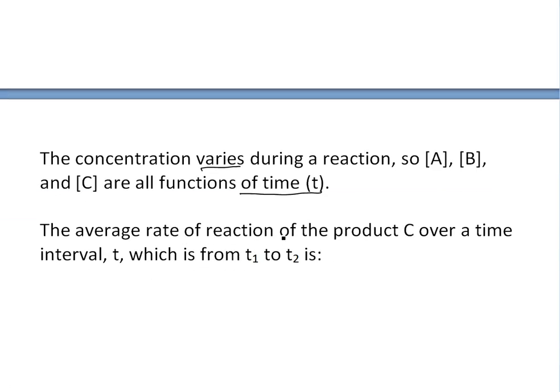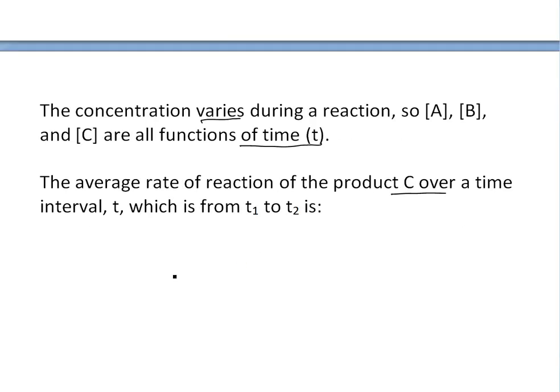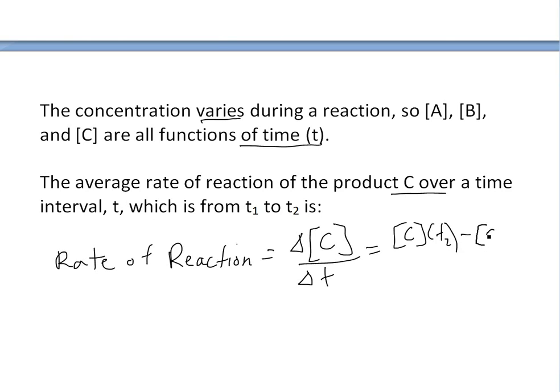If you were to get the average rate of reaction of a product C over a time interval T, which is between T1 and T2, then the rate of reaction equals delta [C] over delta T. This equals the concentration of C at T2 minus the concentration at T1, all divided by T2 minus T1.